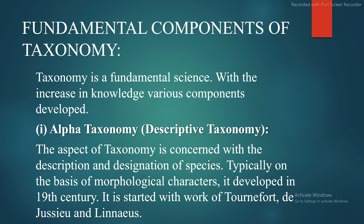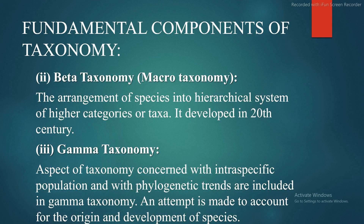Second is beta taxonomy, also called microtaxonomy or macrotaxonomy. It is the arrangement of species into a hierarchical system of higher categories or taxa and developed in the 20th century. Third is gamma taxonomy — the aspect of taxonomy concerned with intraspecific populations and phylogenetic trends. An attempt is made to account for the origin and development of species.